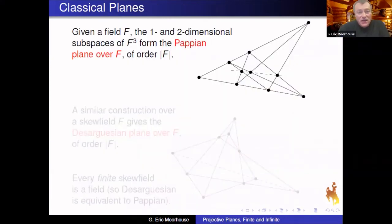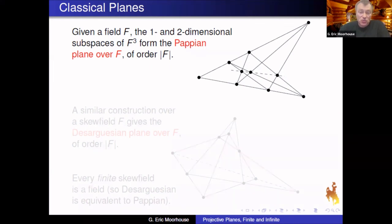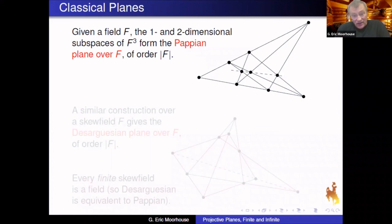A little more terminology: every kind of plane I talk about today will be a projective plane. The classical constructions start with a field F — inside the three-dimensional vector space over F, the subspaces of dimension one and two form the points and lines of a projective plane. This is called the Papian plane, because these are exactly the planes satisfying the theorem of Pappus. The Pappus condition holds exactly in planes coordinatized by a field, and the order of the field equals the order of the plane.